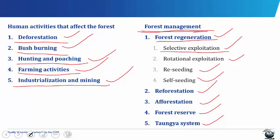Selective exploitation involves the felling of trees of a specified girth, age and growth — meaning mature trees are felled to allow younger ones to develop and replace them. In rotational exploitation, this involves dividing the forest into many partitions which are then exploited yearly in rotation. Depending on the number of partitions, it can take up to 40 years to return to the first partition.